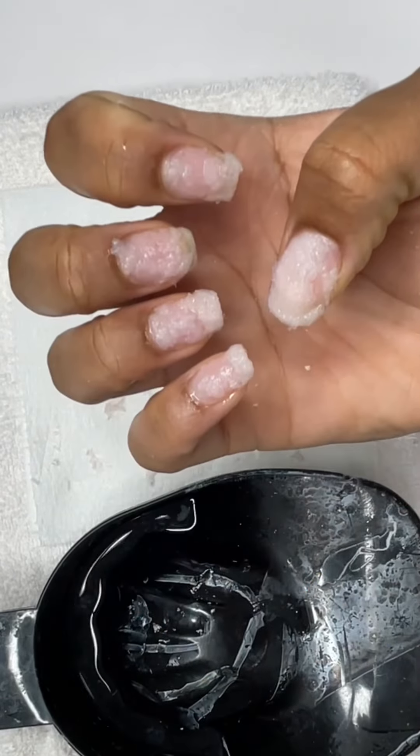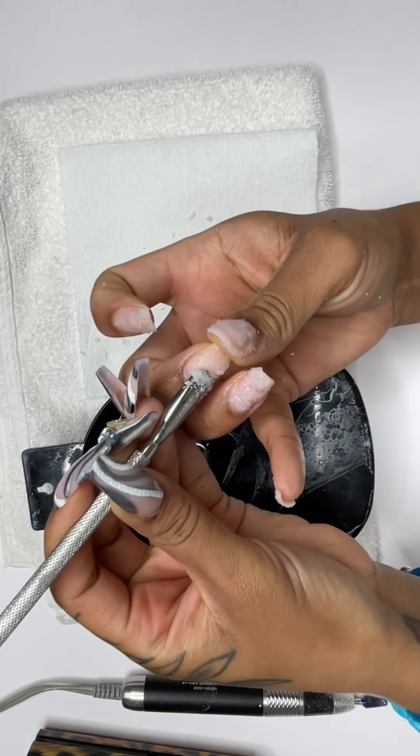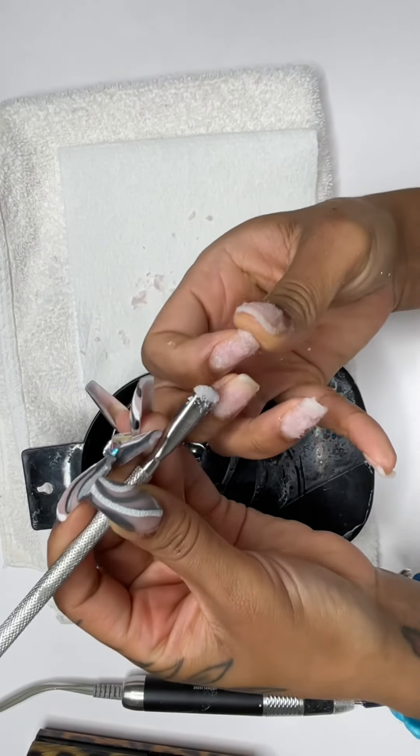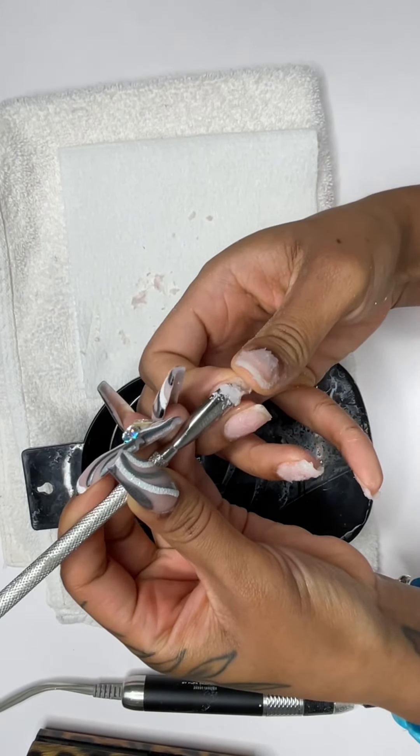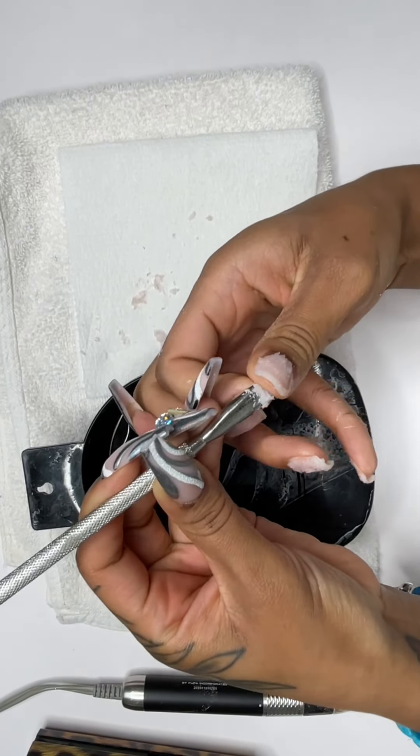Here it is, so now you can see the rest of that product is just ready to just be basically rubbed off. I'm still taking that cuticle pusher to be able to push off the remaining product that is on the nails, and it's just coming off so easy.